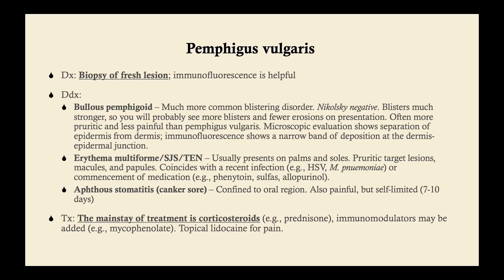The treatment for pemphigus vulgaris is corticosteroids, typically oral prednisone. If the patient needs long-term treatment, we try to transition to immunomodulators — such as mycophenolate or rituximab — to avoid corticosteroid side effects like weight gain and osteoporosis. Topical lidocaine can be given for pain.